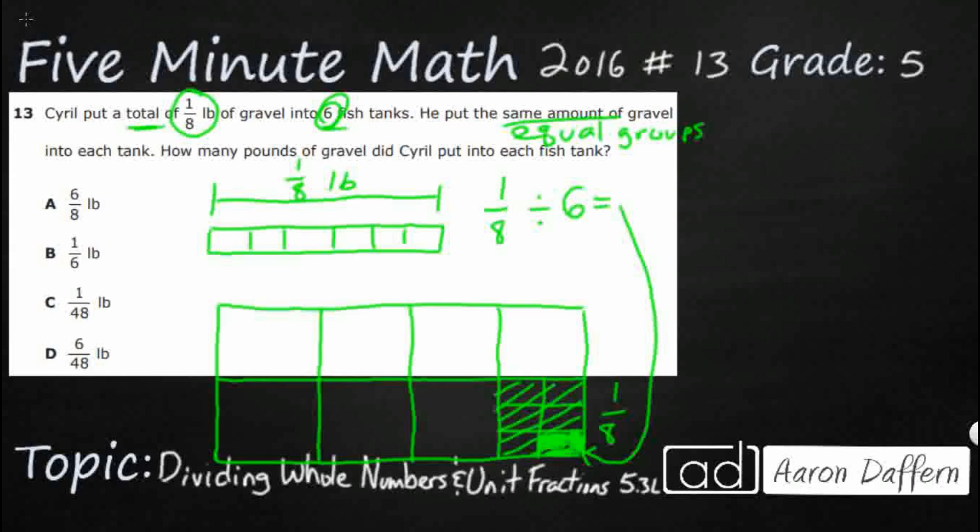So how do we figure out what that is? We've got our answers over here. A, B, C, and D. Well, one thing we can do is we can say to ourselves, well, if we broke this eighth into six pieces. And what if we did that? What if we broke the rest of these into six pieces? What would we have?